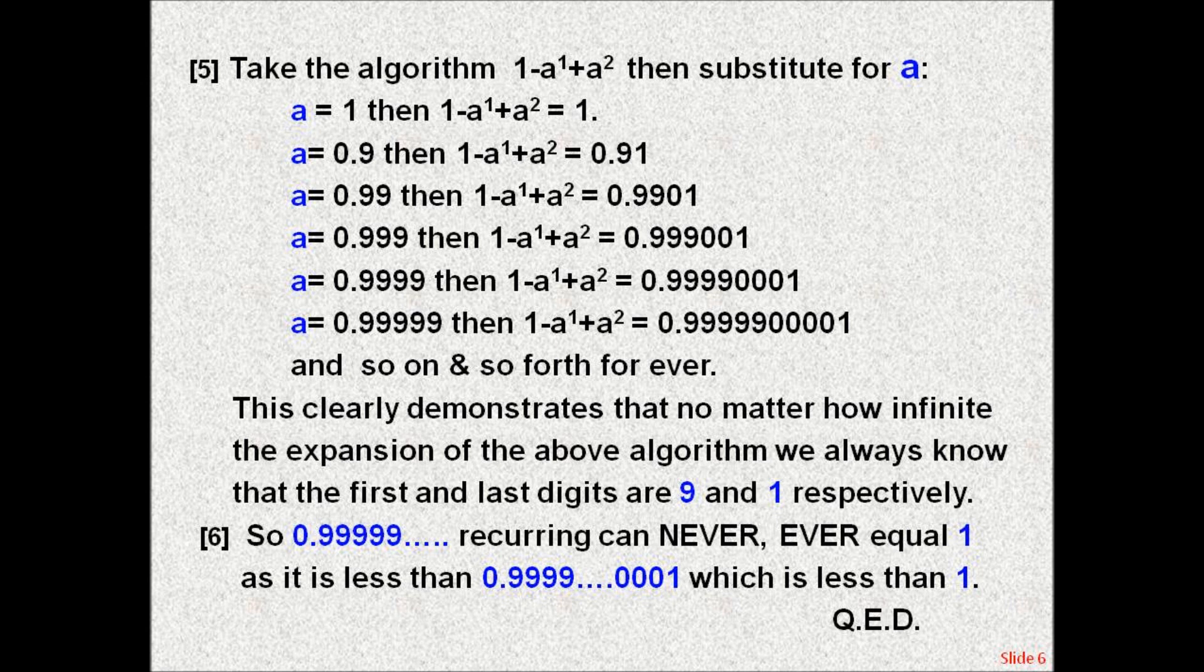This clearly demonstrates that no matter how infinite the expansion of the above algorithm, we always know that the first and last digits are 9 and 1, respectively. So 0.999 recurring can never ever equal 1, as it is less than 0.9999 ad infinitum plus 0, 0, 0, 0 ad infinitum plus 1, which is less than 1. QED.